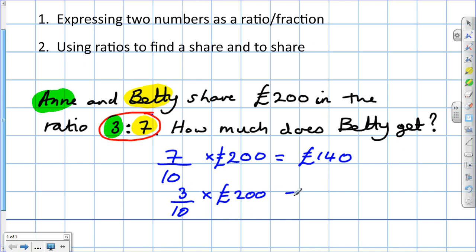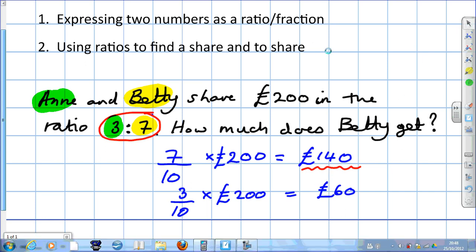I said there was another way of doing it. When there's only two people involved and you know what one person gets, you've already worked that out, 140. You could just take that away from 200. I'll go through one more example like this.